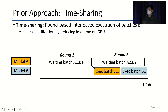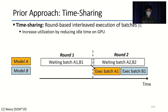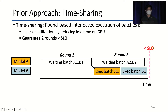Another prior approach used for scheduling inference is timesharing. Timesharing is used to serve multiple models by interleaving execution of batches for each model. The approach increases utilization by decreasing the idle time of GPU by executing batches more frequently. Based on the approach published in 2019, waiting and executing batches are done in consecutive rounds. For example, when timesharing two models A and B, the first round is used to wait and form batches of both models, and the second round executes those batches in an interleaving manner. Since forming and executing batches of both models must guarantee SLO, two rounds must be within SLO.